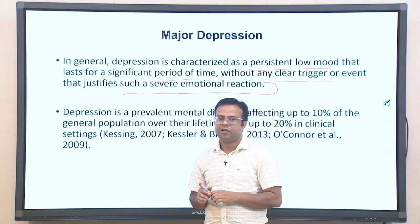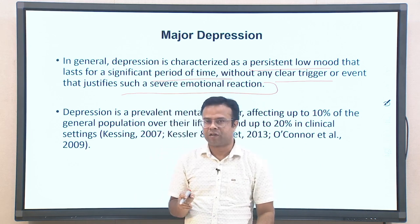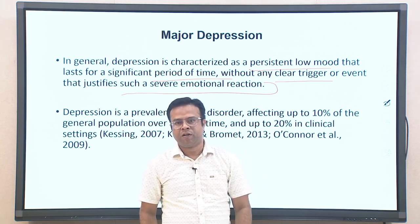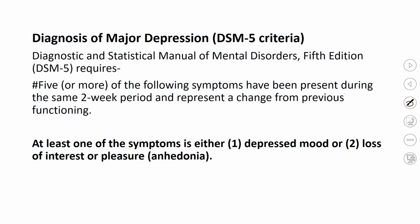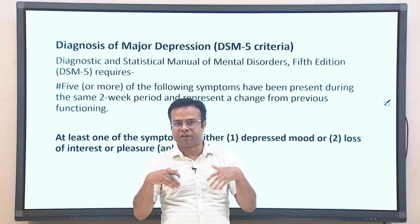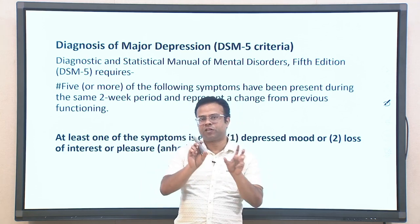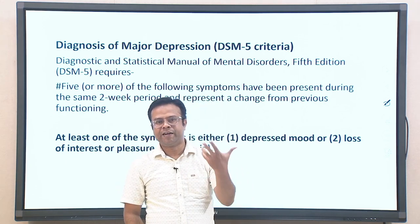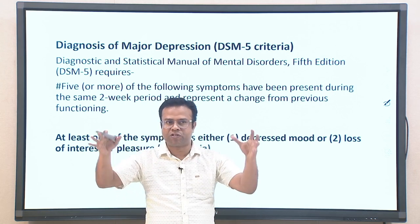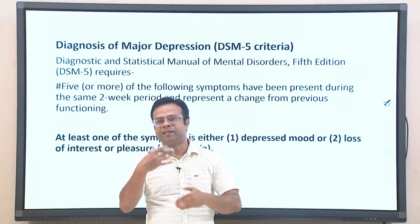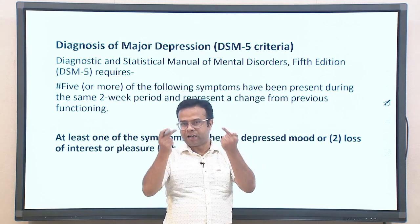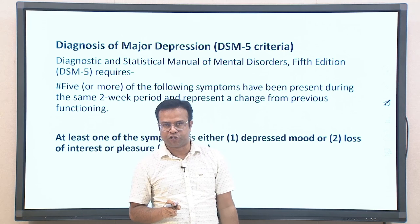Depression is a very prevalent disorder affecting diverse people. Statistics show about 10 percent of the general population is affected, and in clinical settings it could be around 20 percent. The DSM — Diagnostic and Statistical Manual of Mental Disorders — classifies different mental disorders; the fifth version is the latest, and we will look at the criteria within it.